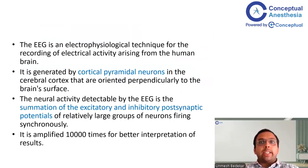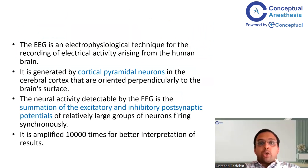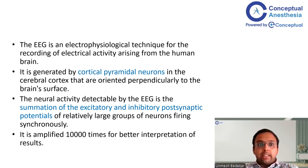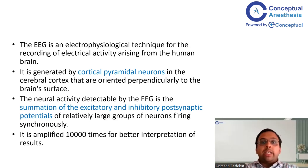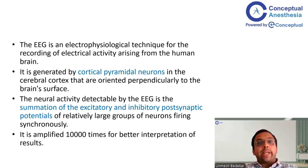EEG is an electrophysiological technique for recording electrical activity arising from the human brain, particularly the cortex. The cortical pyramidal neurons are oriented perpendicularly to the brain surface, and signals are intercepted from there. The neural activity detectable by EEG is the summation of excitatory and inhibitory post-synaptic potentials — EPSP and IPSP — of relatively large groups of neurons firing synchronously. These signals are then amplified up to 10,000 times for better interpretation.